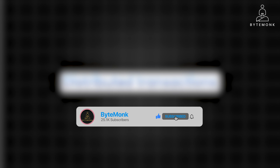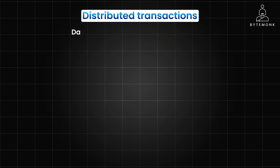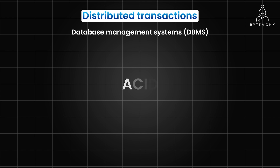The core idea behind distributed transactions is to ensure that all operations within a transaction either succeed together or fail together. This guarantees consistency and prevents data from becoming inconsistent across different parts of your system. Database management systems, or DBMS, are designed to uphold ACID properties for the transactions they manage.